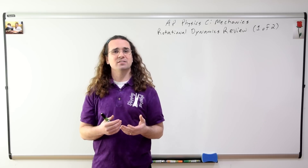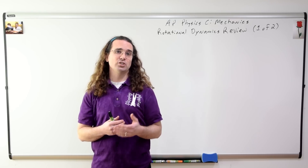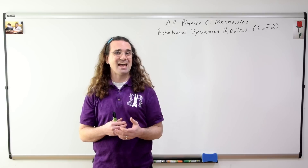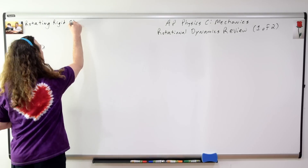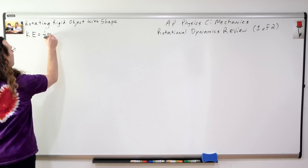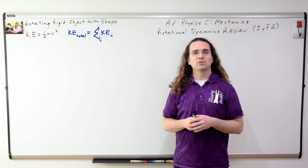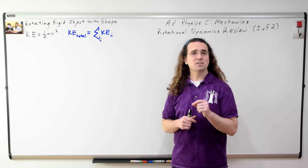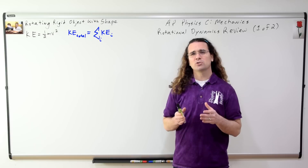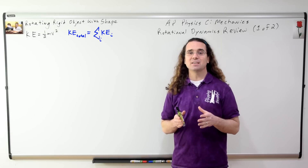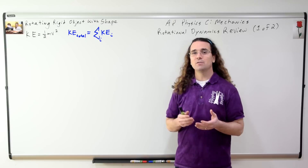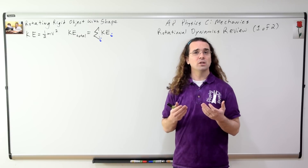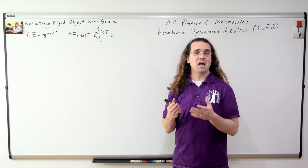Let's start by analyzing a rigid object with shape which is rotating. Every piece of a rotating object has kinetic energy, and the total kinetic energy of the object equals the sum of the kinetic energies of each piece of the object. In other words, we're treating this object basically as a system of particles.